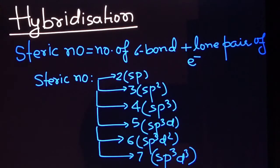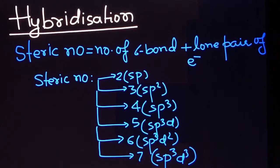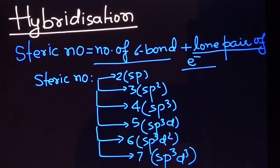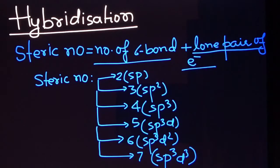Hello friends, good morning. Today we are going to learn about hybridization. Basically, hybridization is determined with the help of a steric number. The steric number is the number of sigma bonds plus lone pairs of electrons. You have to find the number of sigma bonds formed by the central atom as well as the number of lone pairs of electrons present on that central atom.